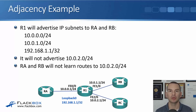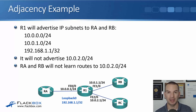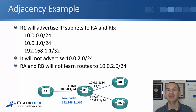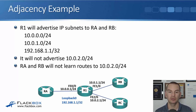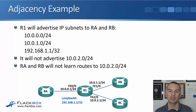But R1 will not advertise 10.0.2.0/24 because that interface was not included in the routing protocol. When you enable a routing protocol globally and then enable it on an interface, the router will try to form an adjacency on that interface by sending hello packets, and it will also advertise the subnet on that interface. But if an interface is not included in the routing protocol, the router won't send hello packets out there and won't advertise the subnet configured on that link to other routers. So RA and RB will not learn routes to 10.0.2.0/24 because we didn't include it in the routing protocol.